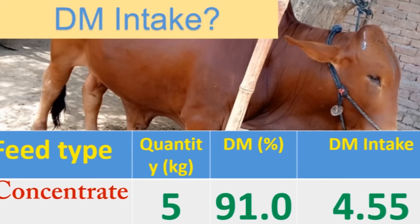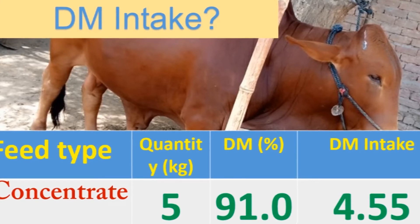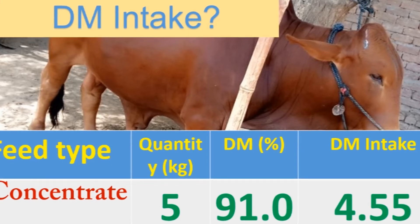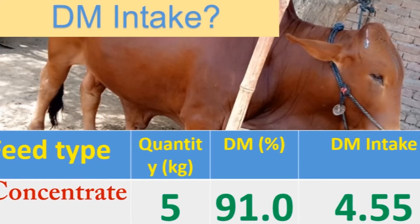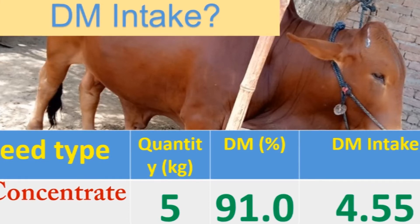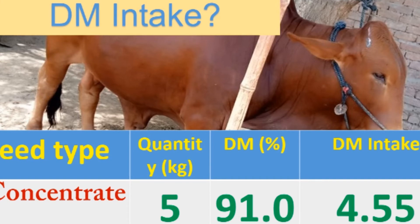From the concentrate bag label, suppose the dry matter content is 91%. If we are feeding 5 kg of concentrate containing 91% dry matter, then the dry matter intake from concentrate is 4.55 kg.